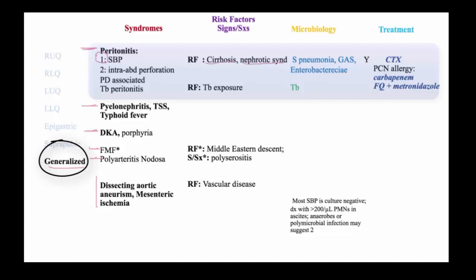The abdominal pain is generally nonspecific and there might not be fever. The diagnosis is established by paracentesis in which greater than 200 neutrophils are found in the fluid. Usually no pathogen is identified, but when bacteria grows, it is usually a single aerobic organism. A polymicrobial infection implies secondary peritonitis, usually due to an intra-abdominal perforation from appendicitis, diverticulitis, or pelvic inflammatory disease.